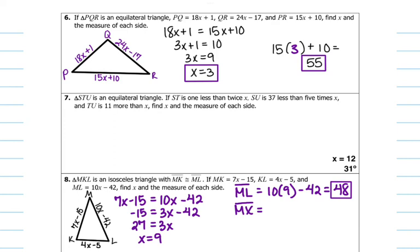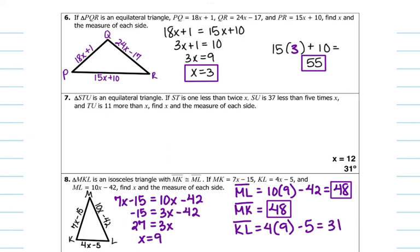For MK, plug 9 back in: 7 times 9 minus 15 gives 48. And then for KL, plug 9 back in: 4 times 9 minus 5 is 31. So you can see this is why it's isosceles — two of the legs are the same and the other one is not.